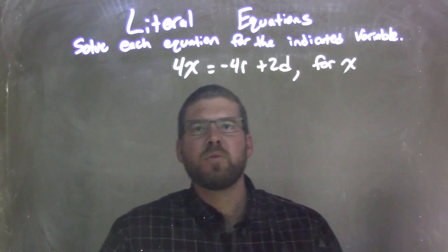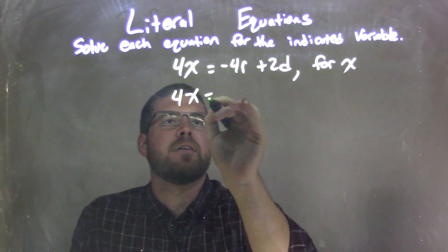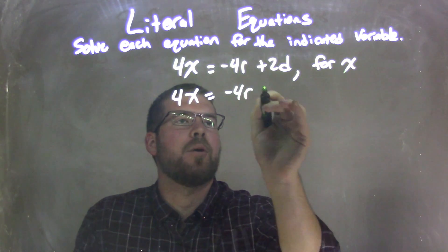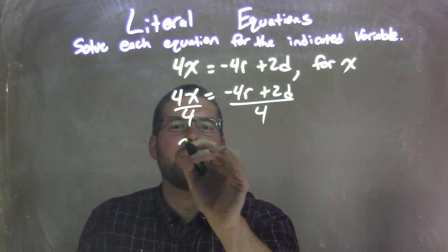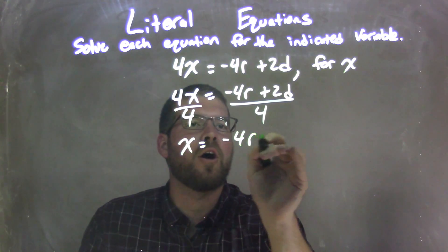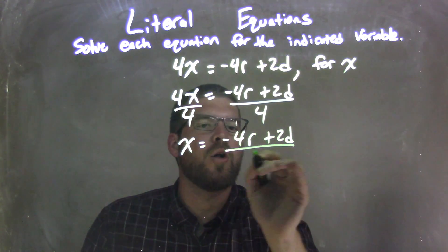This one's pretty simple. I'm going to rewrite this: 4x equals negative 4r plus 2d. Then I can solve it by dividing by 4 on both sides, and I'm left with x equals negative 4r plus 2d all over 4.